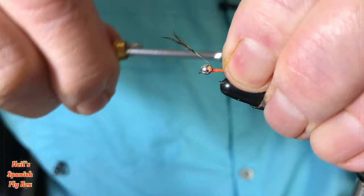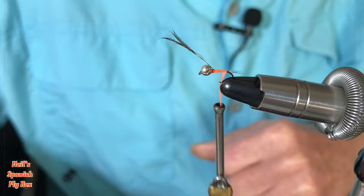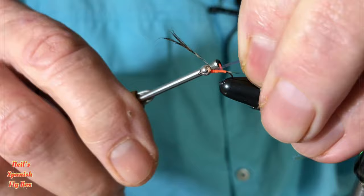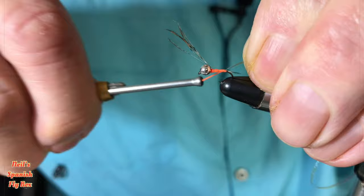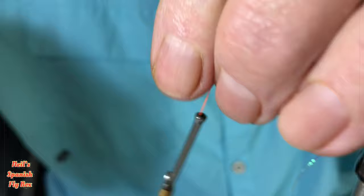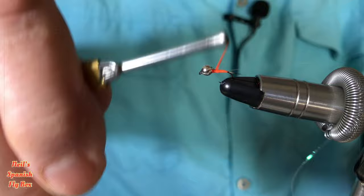Go down to the tail. Now I'm going to tie in the pearl mylar. Let's trim off these ends of the CDC. Let's build it up a little bit at the end here.